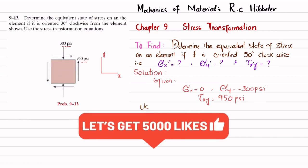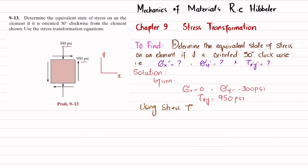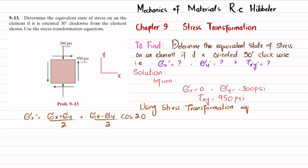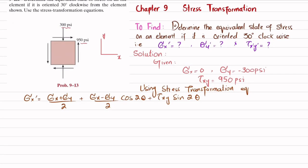Using the stress transformation equation, the first equation is: if you rotate at any angle theta, the stress transformation for the x-component will be sigma x' = (sigma x + sigma y)/2 + (sigma x − sigma y)/2 · cos(2θ) + tau_xy · sin(2θ). Kindly memorize this formula. Since the rotation is 30 degrees clockwise, theta is taken as minus 30 degrees, so 2θ = minus 60 degrees.